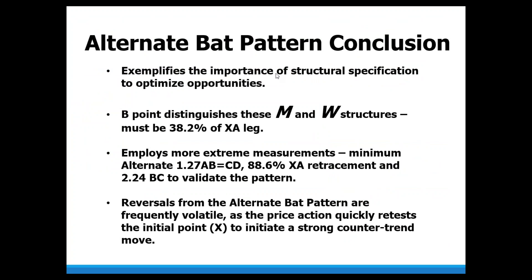So it's really critical to define those structures. We know that the alternate BAT is defined by the M and W with a 38.2% at the B point — it has a low midpoint in the structure. Sometimes it's going to be aggressive price action, but it utilizes those extreme measurements and will line up with a minimum 886. We also look at the 113 — essentially it's a retest of that starting point. If we differentiate that structure, we know at a minimum it'll be a larger retest. The British Pound example showed how the 113 comes into play where price tries to break out of a prior pivot point, can't do it, and then rolls over — initiating a strong counter-trend move. Alternate BAT patterns aren't nearly as common as the regular pattern, but when you see that 38.2% B point, those are good opportunities.